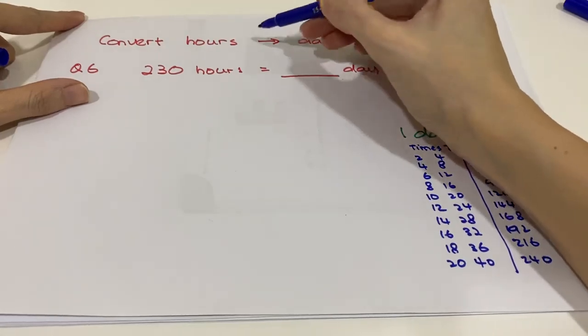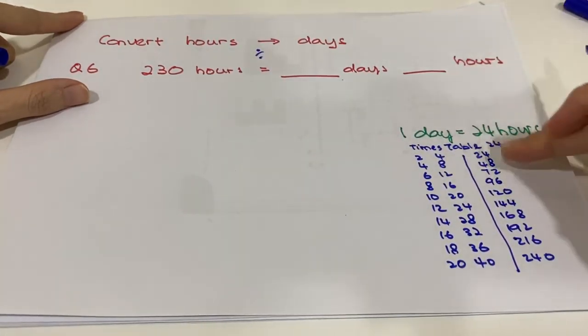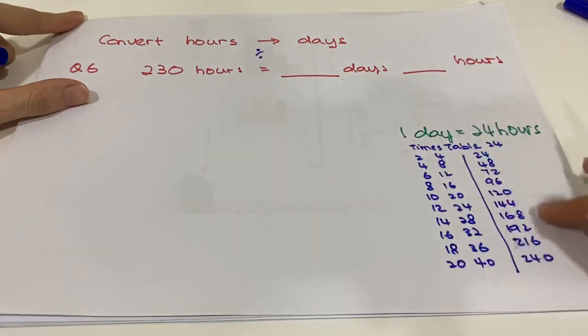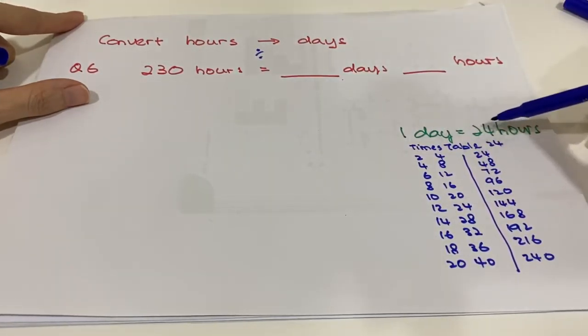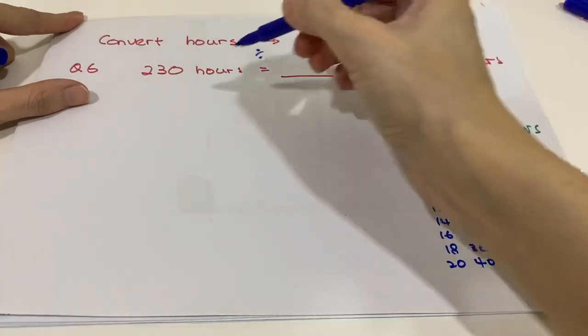I did build the times table for 24 over here because we are going to divide by 24, because one day equals 24 hours. As usual, you build the division.